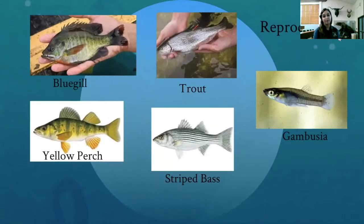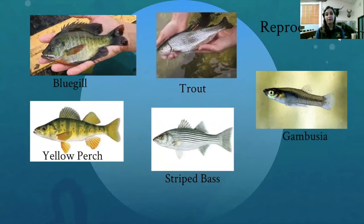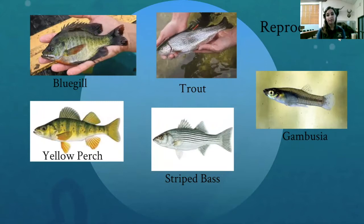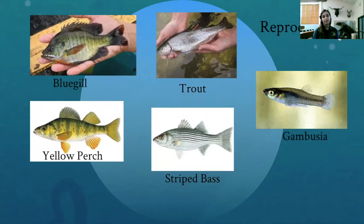Next, we're going to move on to reproduction. The different types of fish on this slide have different ways of laying their eggs or having live birth. The different types of reproduction include eggs laid in nests, free-floating eggs in massive amounts, eggs laid within vegetation, and some fish that have live birth.